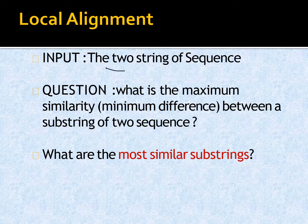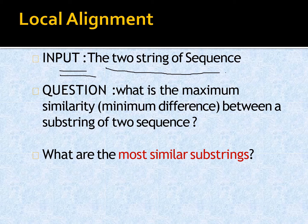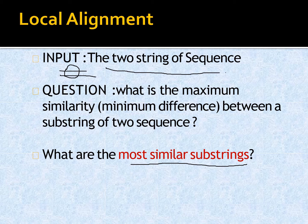Another question: what is the maximum similarity between a substring of two sequences — i.e., what are the most similar substrings? This is where local alignment comes in. Given two sequences, we find the minimum difference between substrings. In local alignment, we consider only a part or substring of a sequence, whereas in global alignment we consider the entire sequence length.